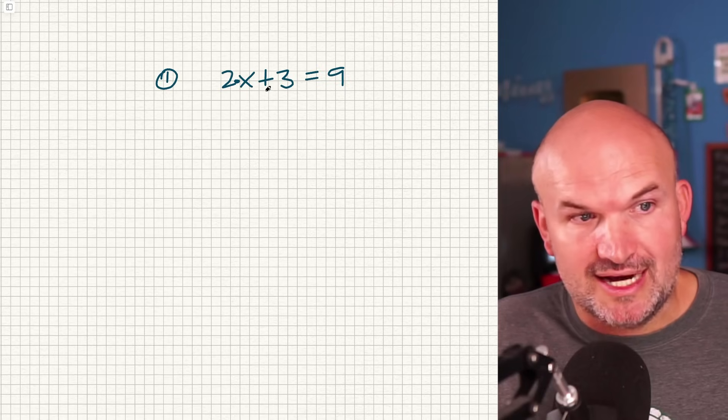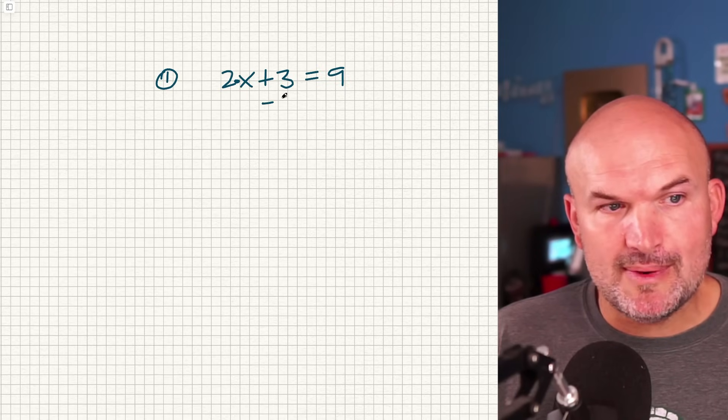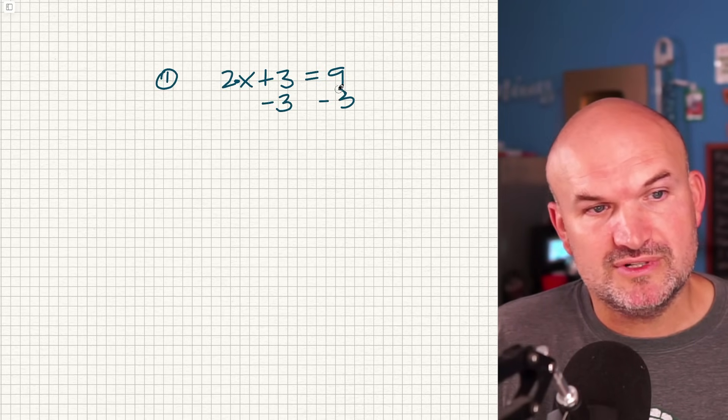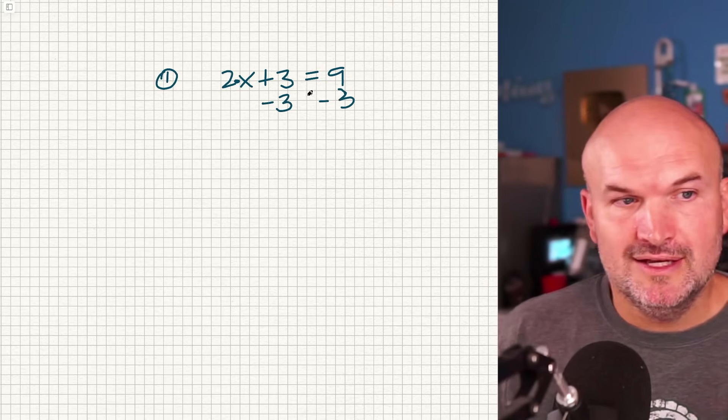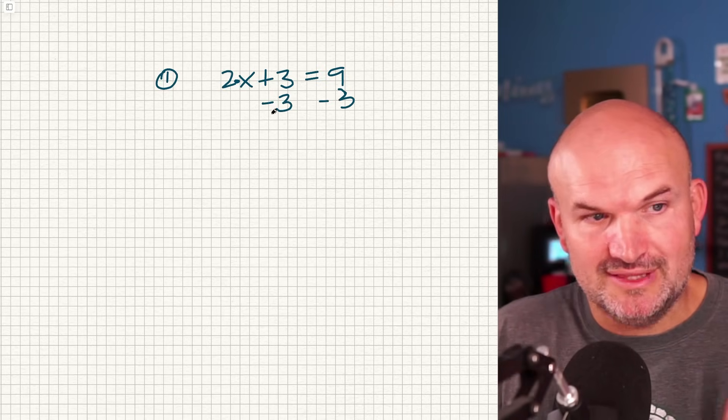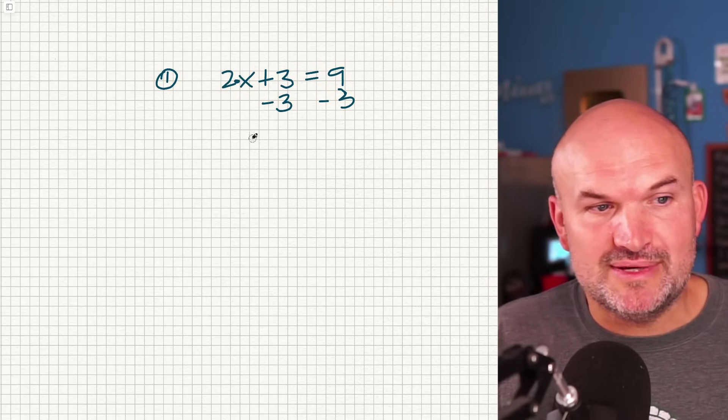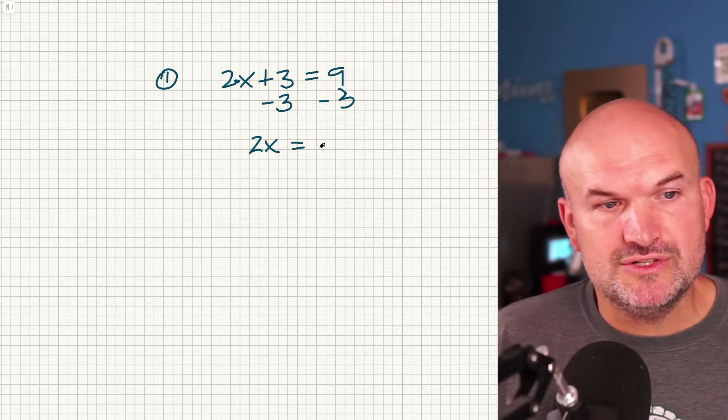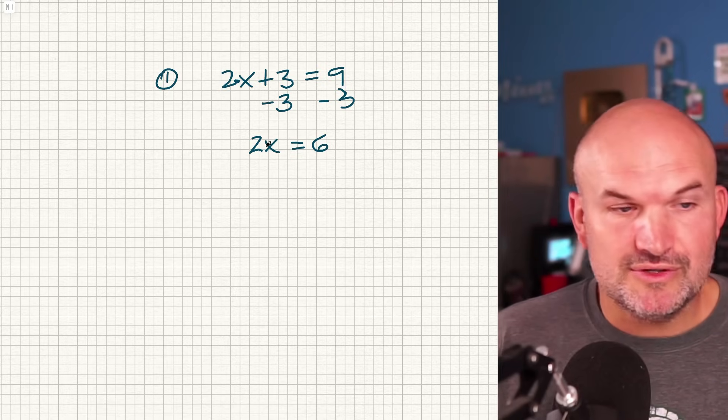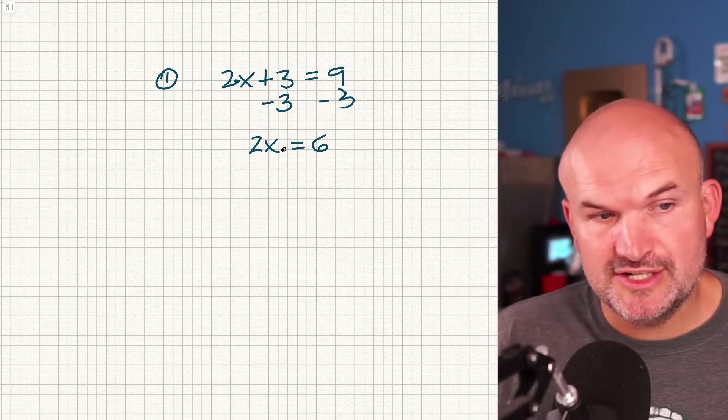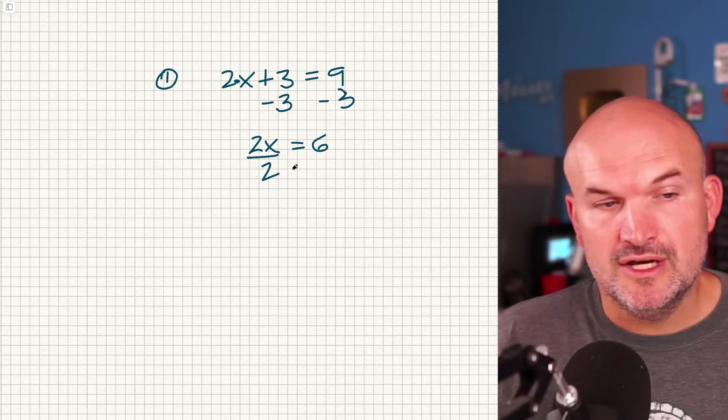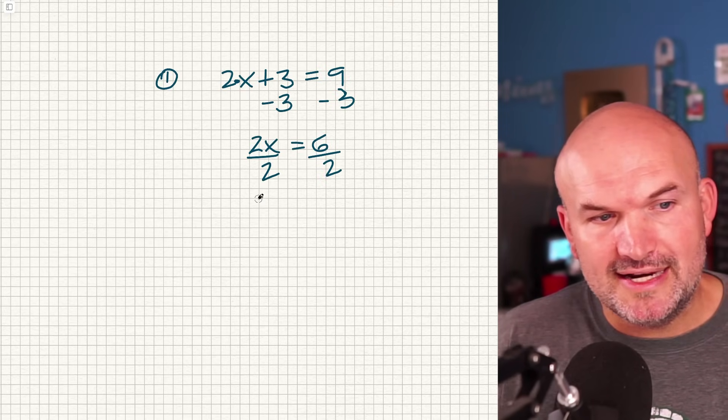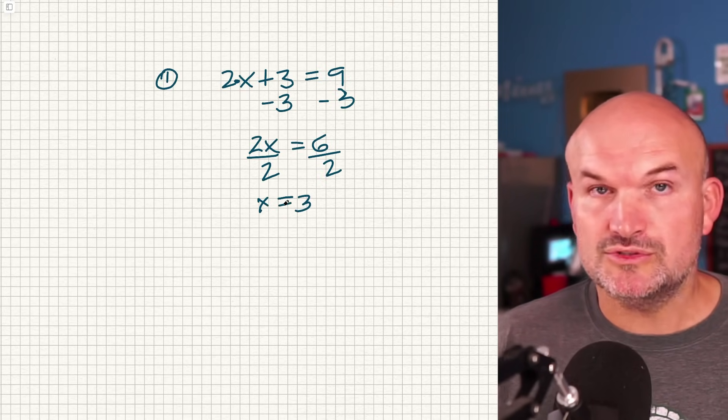To undo addition, I need to subtract a 3. Remember, whatever you do on one side, you have to make sure you do on the other side. That is going to be our properties of equality. So when I subtract a 3, when I add 3 and then subtract 3, that's just going to leave me with a 2x. And then 9 - 3 is going to give me a 6. Now, you can see my x is being multiplied by 2. To undo multiplication, I'm going to have to use division. So I'm going to divide by 2 on the left as well as on the right side. And now I'm going to get a final answer of x = 3.